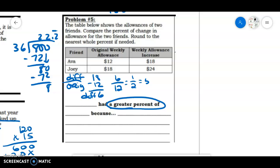If I look at Joey, if we do 24 minus 18, his also increased by $6, but his is $6 over his original was 18, which is 1/3, which is only 33% increase. So I was looking for on this one for you to tell me that Ava did, in fact, have a greater percent increase in her allowance. Please let me know if you have any questions.